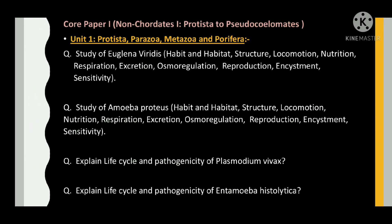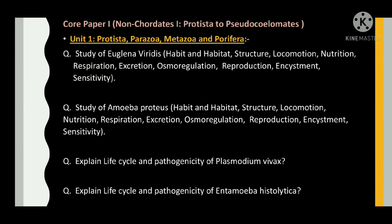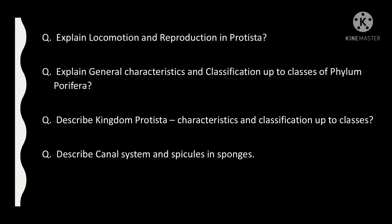Then reproduction and sensitivity for Amoeba. The next question is: explain the life cycle and pathogenicity of Plasmodium vivax. Then explain the life cycle and pathogenicity of Entamoeba histolytica. The next question is: explain locomotion and reproduction in Protista.